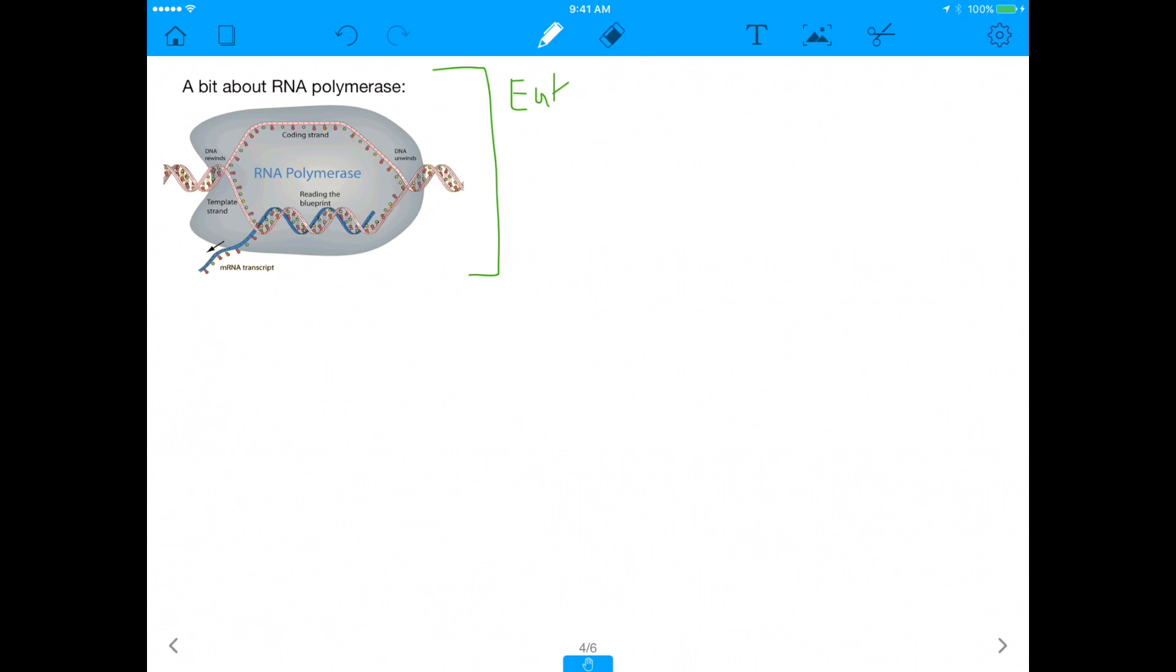Eukaryotes have many RNA polymerases, okay? So some RNA polymerases will transcribe our RNA, some RNA polymerases will transcribe mRNA, some RNA polymerases will transcribe tRNA. There's a lot of RNA polymerases in eukaryotes. But,